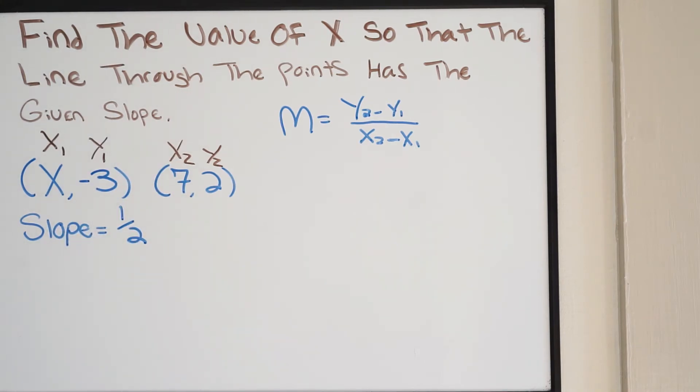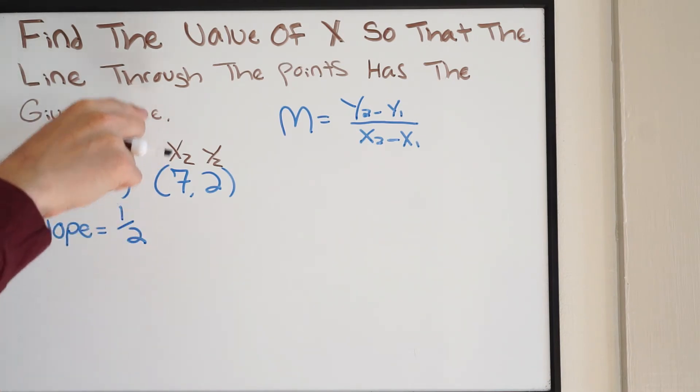Now, you could have gone in reverse. You could have called this x2, but if you did that, you'd have to call this y2. You'll still get the same answer, but the key takeaway here is making sure you're staying consistent. Meaning, if you call this x1, this has to be y1. Same thing here. If you call this x2, this has to be y2. So keep the numbers together.